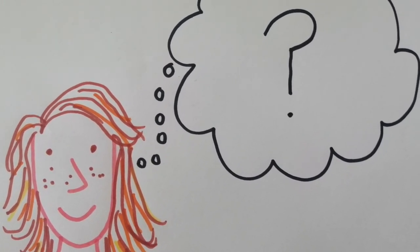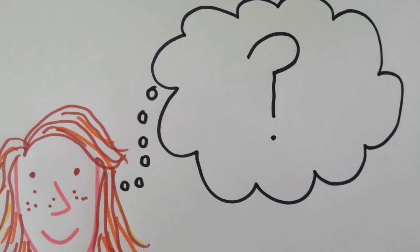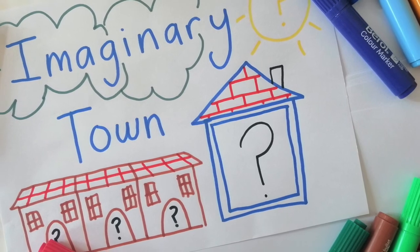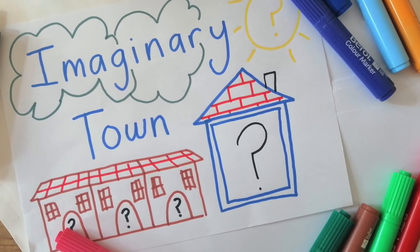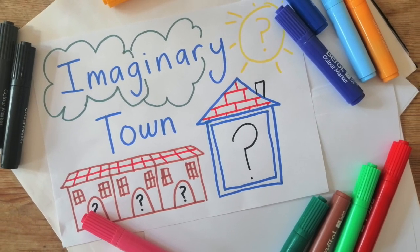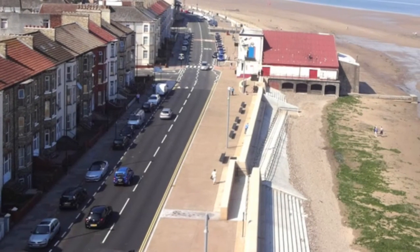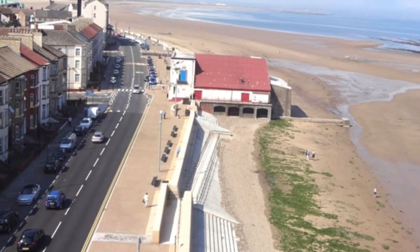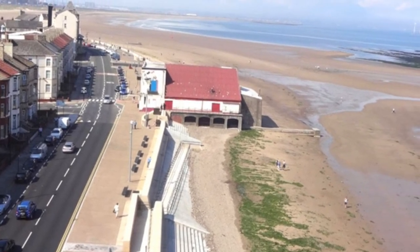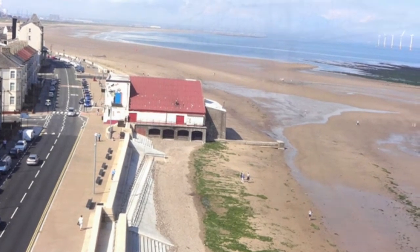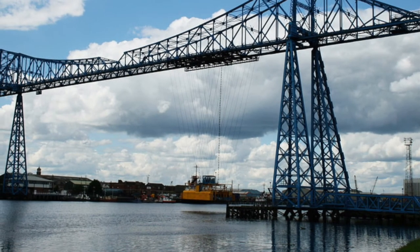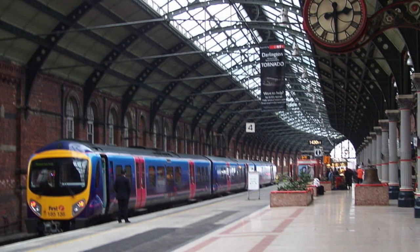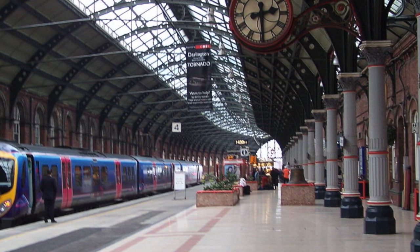What would I put in my town? You'll need some pens and paper and your imagination. Together we're going to create an imaginary town. All the towns in our area have things that are the same and things that are different. For example, Redcar has the beach, Middlesbrough has the river and the transporter bridge, Darlington has a big railway station. What will your town have and where will it be?